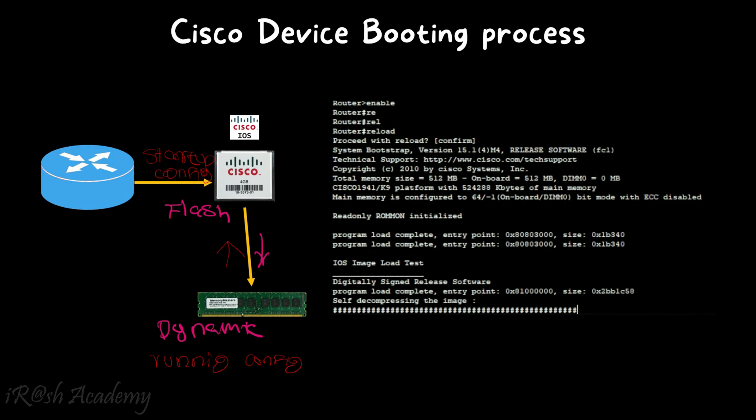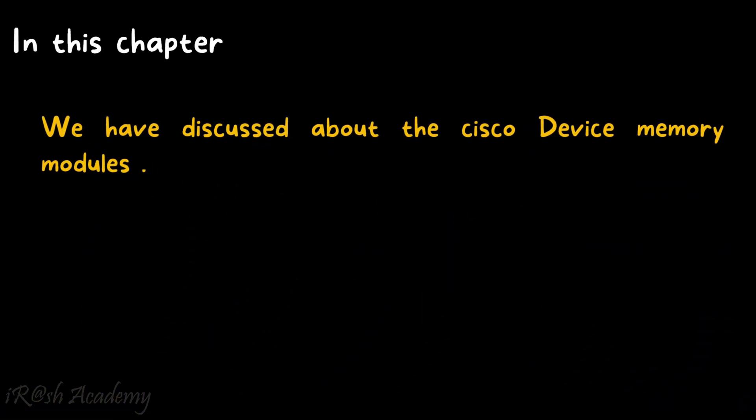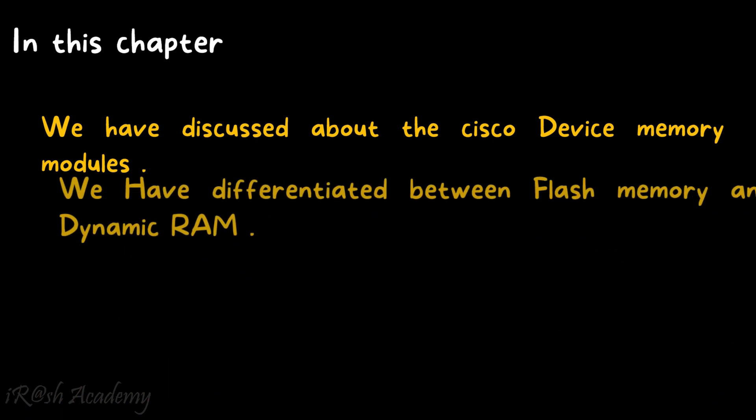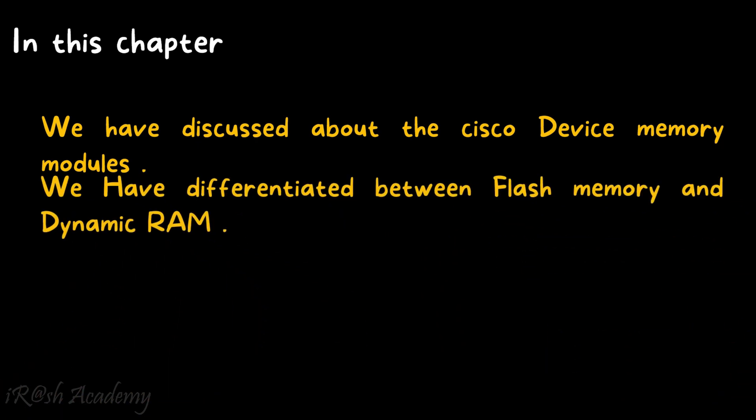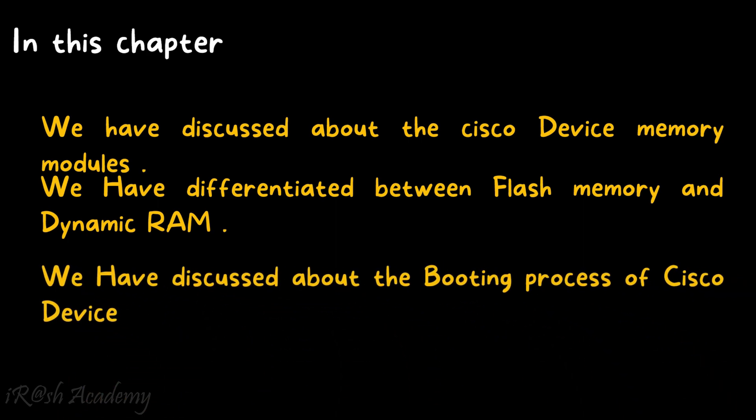So this is the booting process of a Cisco device with two different kinds of configuration. In this chapter, we have discussed Cisco device memory modules, differentiated between flash memory and dynamic memory, and discussed the booting process of a Cisco device.